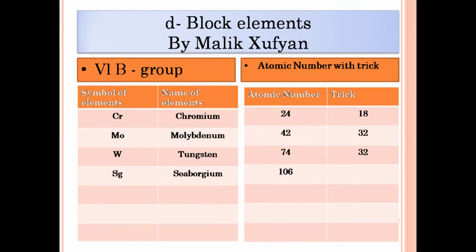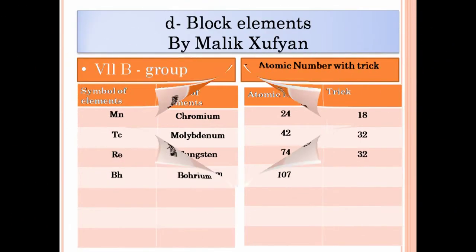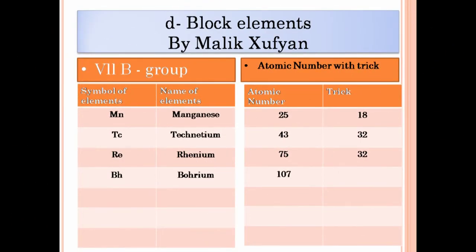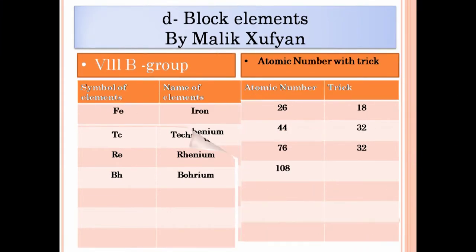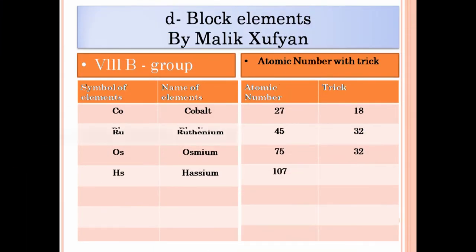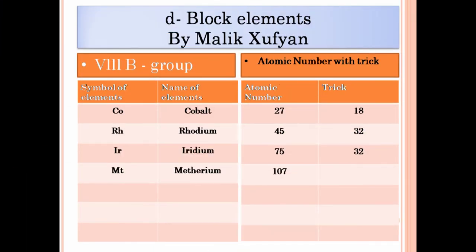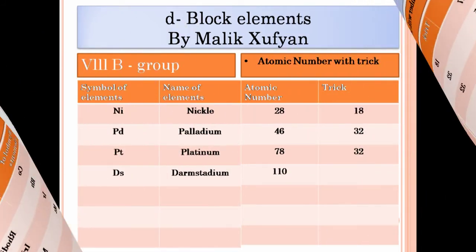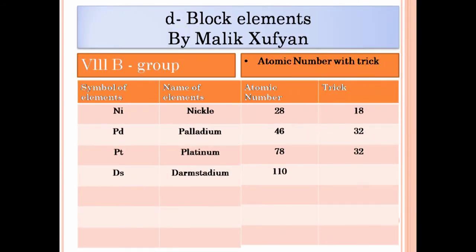Ionic bonding is metal, non-metal. They give and take each other's electrons. If they bond, an ion is formed. Lose one, it's positive. Gain one, that's a negative charge.